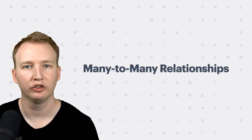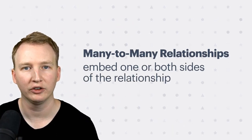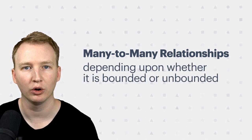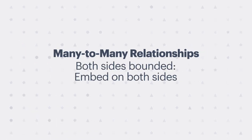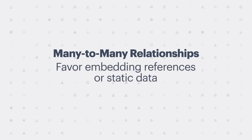To recap, data modeling for many-to-many relationships can be represented by embedding one or both sides of the relationship depending on whether it is bounded or unbounded. If both sides are bounded, you can embed on both sides. If only one side is bounded, you should avoid embedding the unbounded side. You should also favor embedding references unless you have information that is primarily static and won't change over time.